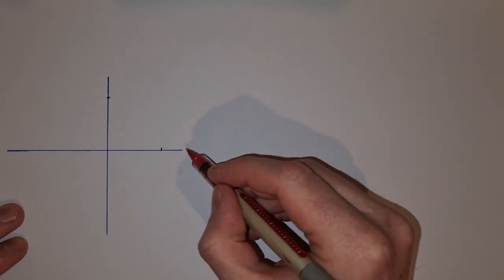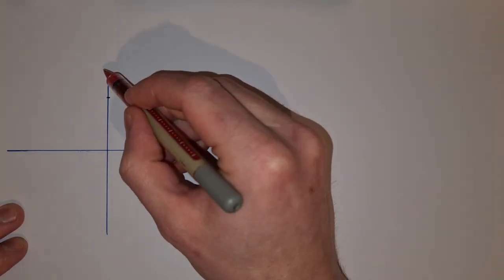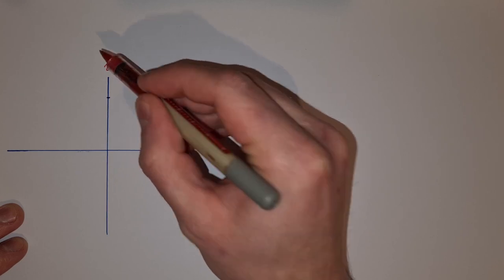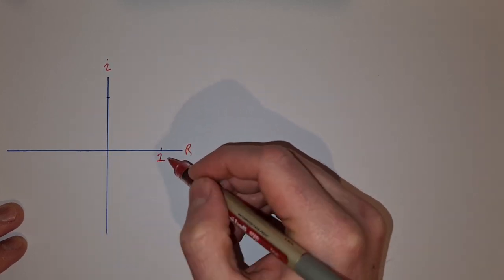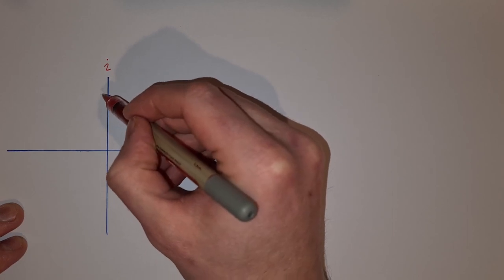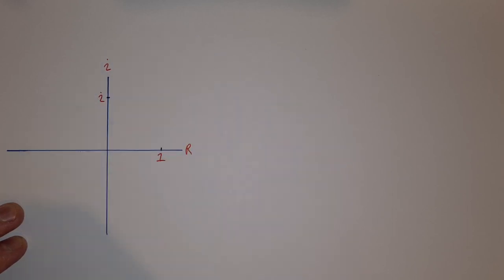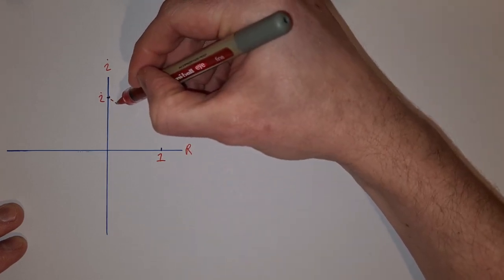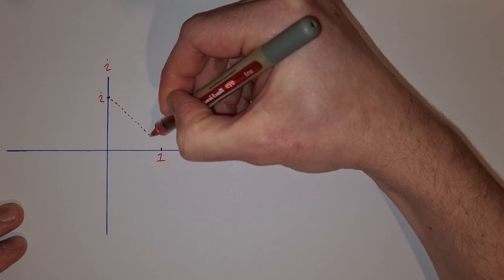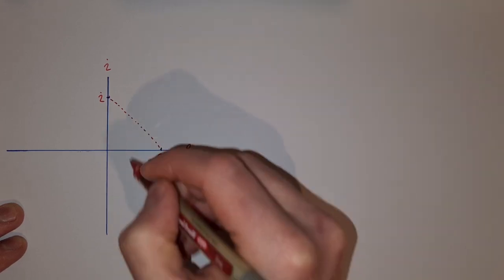So what I have here is my real axis and my imaginary axis from complex numbers. I'm going to go out to one on the real axis and up to i on the imaginary axis, and what I'm going to do now is draw a line joining i down to one.